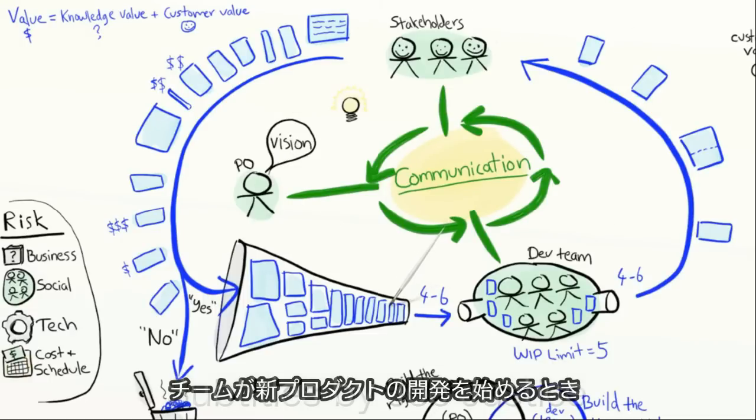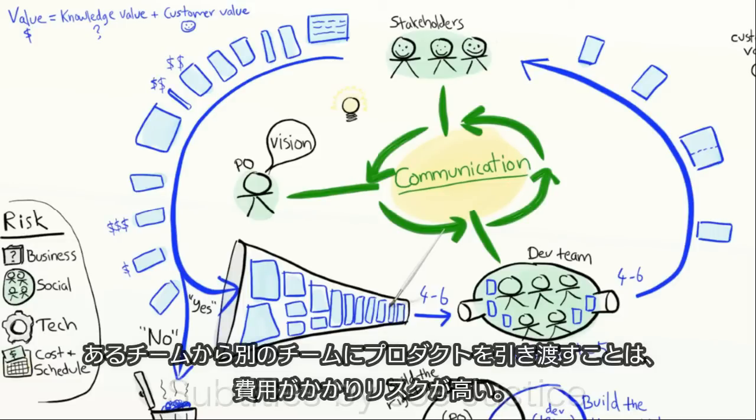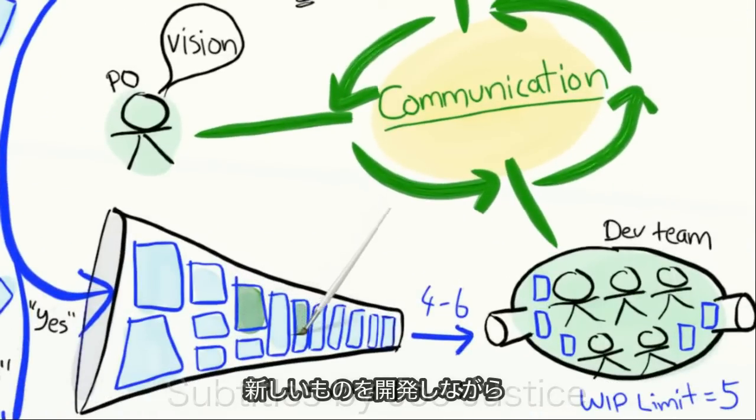So when a team starts developing a new product, what happens to their last one? Handing off a product from one team to another is expensive or risky. So a more common scenario is that the team continues maintaining the old product while developing the new one.